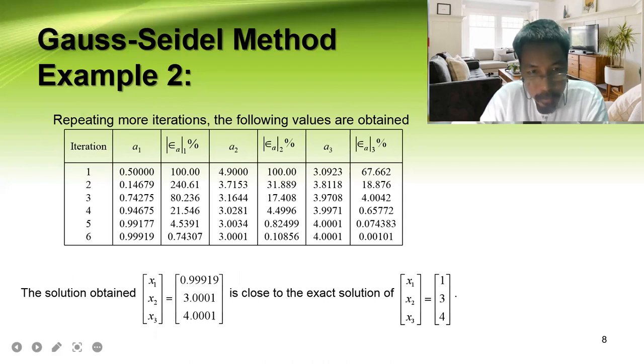Doing it up to six iterations, this is your practice assignment. After six iterations, you can see that the error substantially decreases. From 100%, it becomes greater at 240%, but then goes back to decrease to 80%, then 21%, then 4%, and 0.7% error.